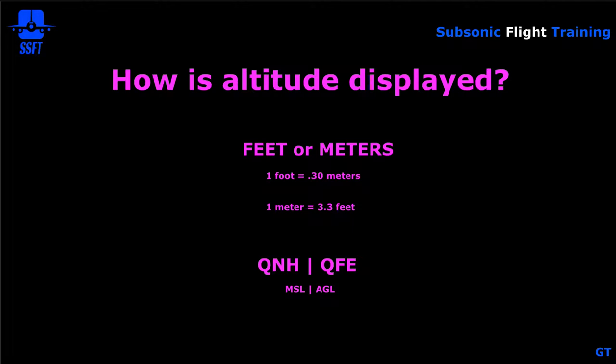For example, if you're at an airport with an elevation of 1,529 feet, when you set the current QNH altimeter setting it would show that field elevation. If you set QFE, the altimeter would read zero as your starting point, and then everything would be referenced from your altitude above ground level, not above mean sea level.